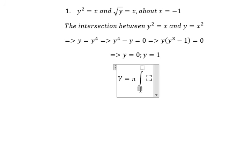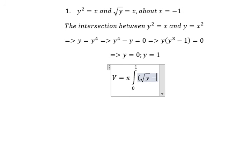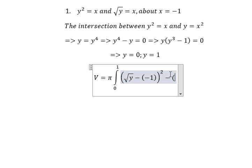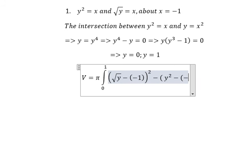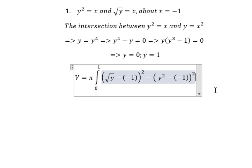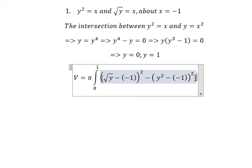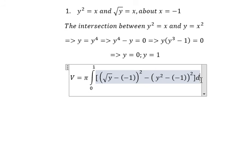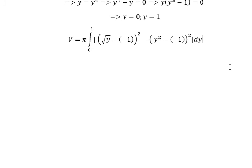The bounds are 0 and 1. In the formula we have the square root of y plus 1, quantity squared, minus y squared plus 1, quantity squared, all under the integral. We put everything under the square brackets with dy. So here is the formula to find the volume.